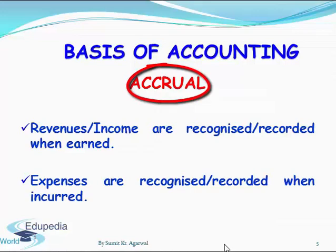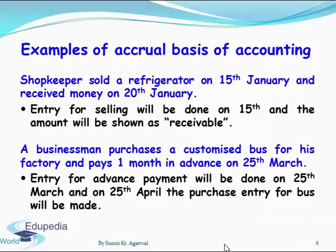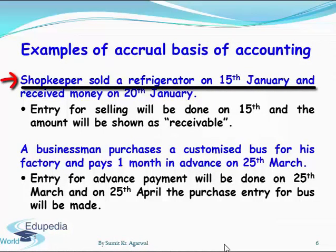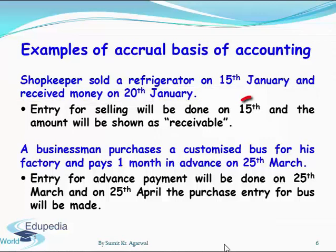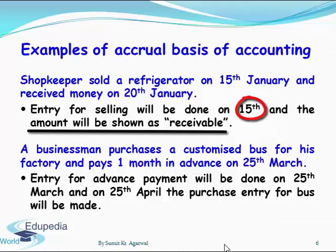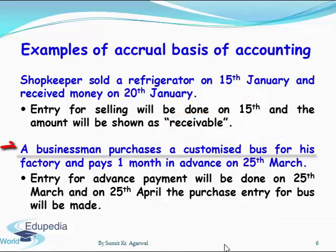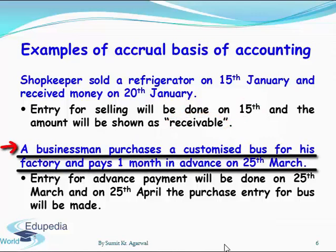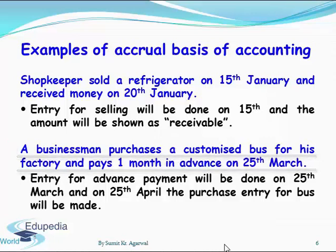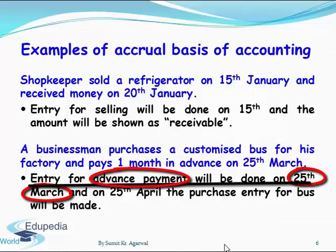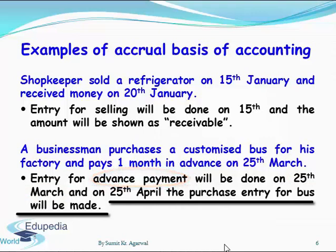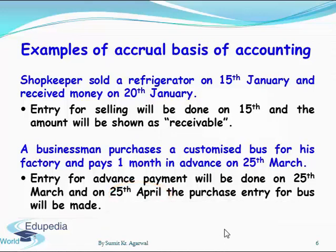Now let's understand accrual basis with the same two examples. In accrual basis, when the shopkeeper sells a refrigerator on 15th January and receives money on 20th January, the entry for sale will be done on 15th January itself, and the amount to be received from the customer will be shown as receivable. In our second example, where the businessman paid for the bus one month in advance on 25th March, the entry on that date will be recorded as advance payment for bus. The purchase entry or addition to the asset will be done only when he receives the bus on 25th April, and the advance entry from 25th March will be adjusted or squared off with this purchase entry.